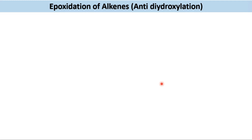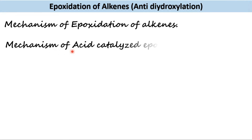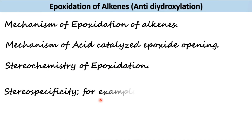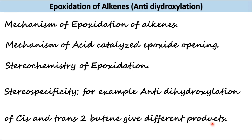Hello and welcome back to the Umbrella Academy. I am Mir Niyaz. In this lecture we will discuss the mechanism of epoxidation of alkenes, mechanism of acid-catalyzed epoxide opening, stereochemistry of epoxidation, and stereospecificity — for example, trans-dihydroxylation of cis and trans-2-butene give different products.